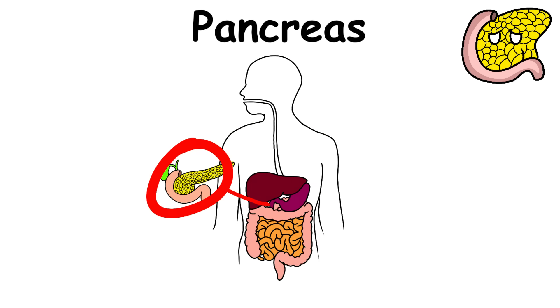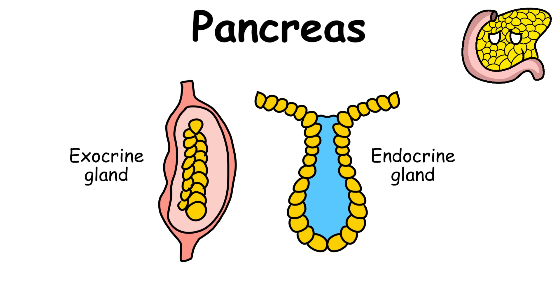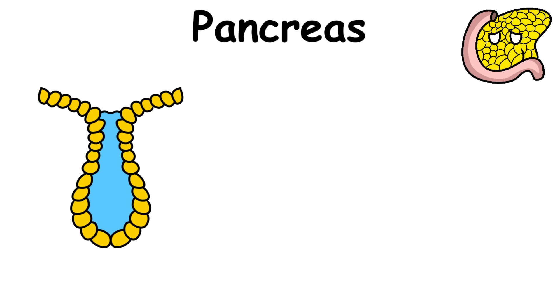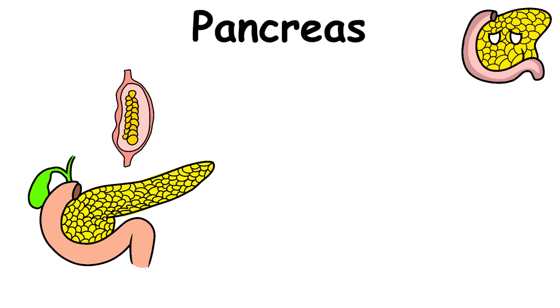The pancreas is located in the upper left portion of the abdomen and plays roles as both an exocrine gland and an endocrine gland. An exocrine gland secretes hormones into the ducts while an endocrine gland secretes hormones into the blood vessels.